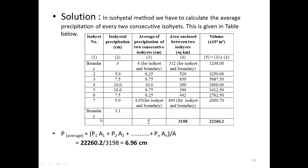To solve this, we calculate the average precipitation of every two consecutive isohyets. The isohyet precipitation values are: boundary = 3, second = 5, third = 7.5, fourth = 10, fifth = 10, sixth = 7.5, seventh = 5, and last boundary = 3.1. The average precipitation between consecutive isohyets is 4, 6.25, 8.75, 10, 8.75, 6.5, and 4.05. The corresponding enclosed areas are also given.